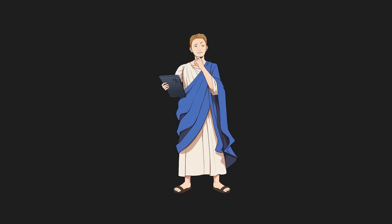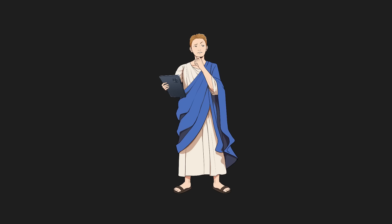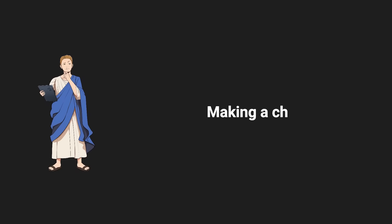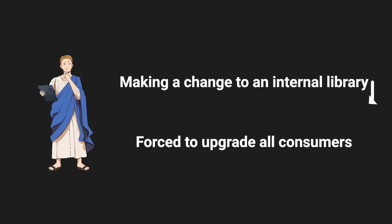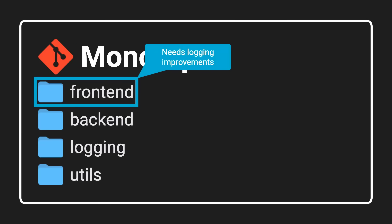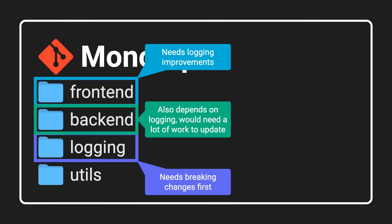Now, it seems that monorepos have some clear advantages. So how can I claim that they make dependency management more complex? Well, I found that these advantages also come with a significant restriction: whenever you make a change to an internal library, you're also forced to upgrade all its consumers immediately. For example, let's say you want to improve the logging in the frontend, but to do that you need to make a breaking change to the shared logging library. However, the backend also heavily depends on this library, and updating it would be a significant amount of work.